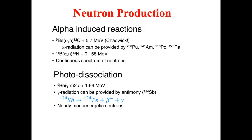In photodisintegration reactions, what we do is shine the beryllium-9 nucleus with gamma radiation. As a result of that gamma radiation on the beryllium nucleus, we get neutrons along with two alpha particles, plus 1.66 MeV of energy.